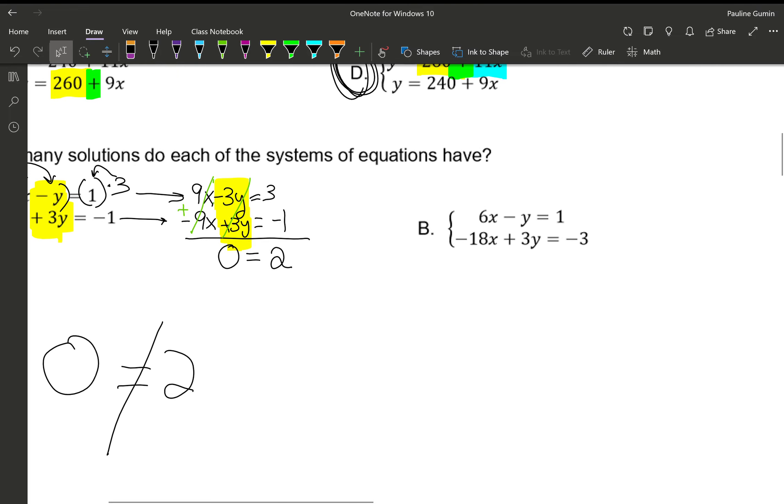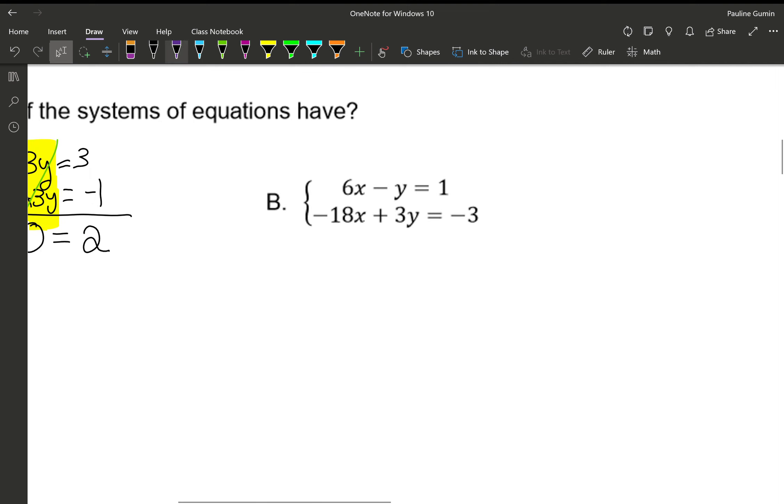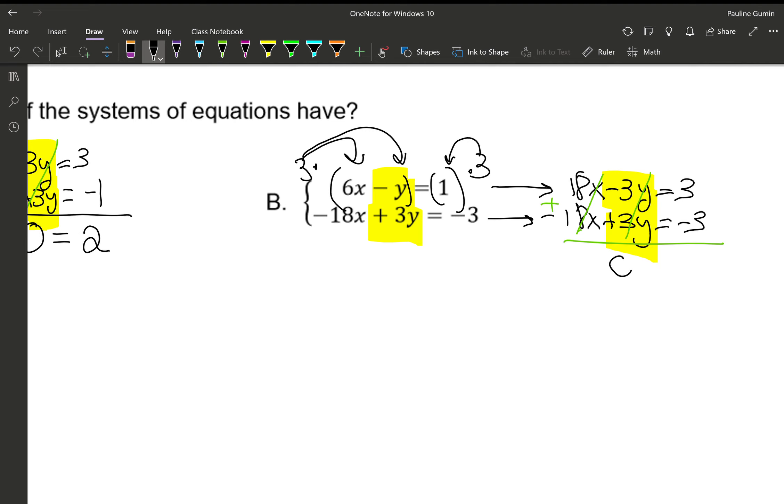I'm going to do the same thing for letter B. It looks like the Y's are going to be easier to get rid of as well. So I have once again a negative Y and a positive 3Y. So just like in the last problem, I'm going to multiply this equation by 3, and then the Y's should be able to cancel. So that gives us 18X minus 3Y equals 3. The bottom equation, I'm going to keep exactly the same because we already have a positive 3Y. So if you check it out, these cancel. Wonderful. Let's do some adding. Negative 18 and 18, they cancel too.